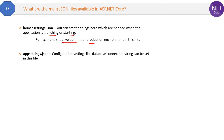The next type of file is appsettings.json. Here, configuration settings like database connection strings can be set. It is like the web.config in ASP.NET MVC and WebForms projects.